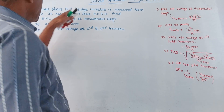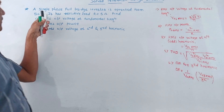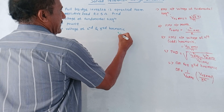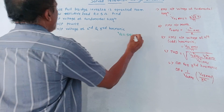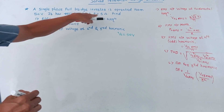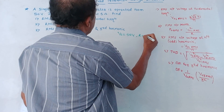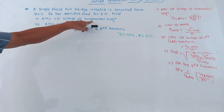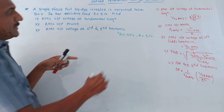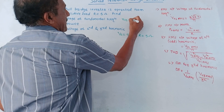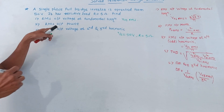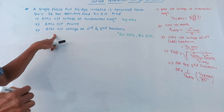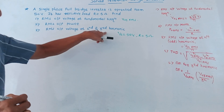Next numerical: a single phase full bridge inverter is operated from a 50 volt DC supply, so the value of Vs is 50 volt. It has a resistive load, and the load R is given as 5 ohm. Find: first part, RMS output voltage at fundamental frequency (V01RMS); second part, RMS output voltage at second and third harmonic.